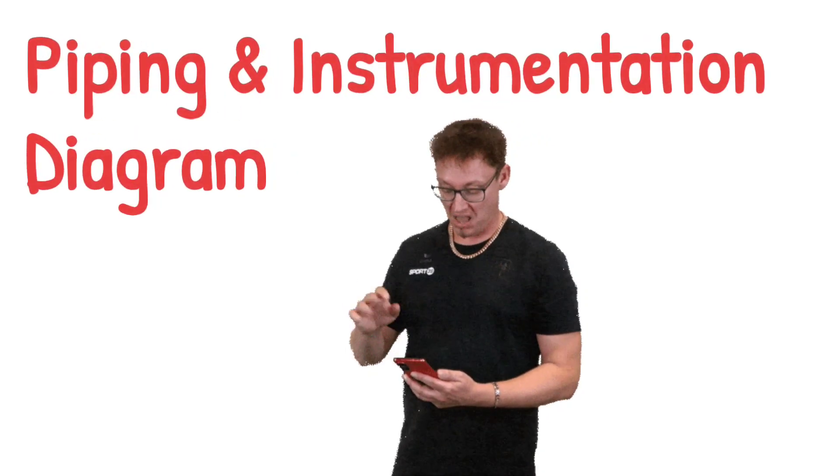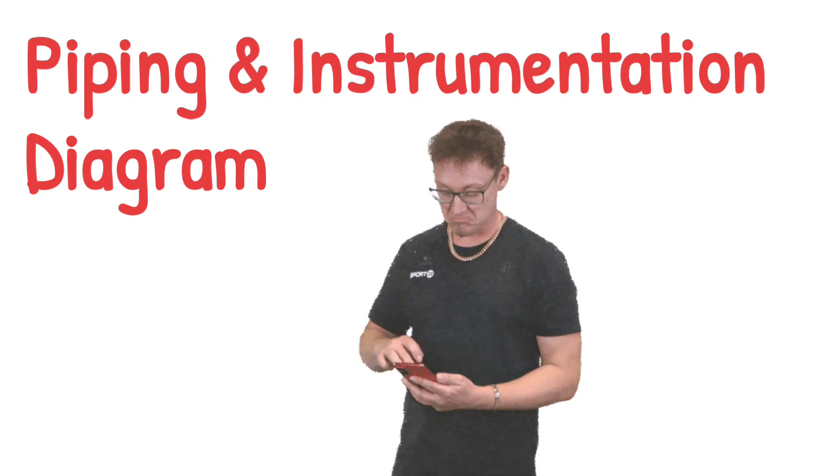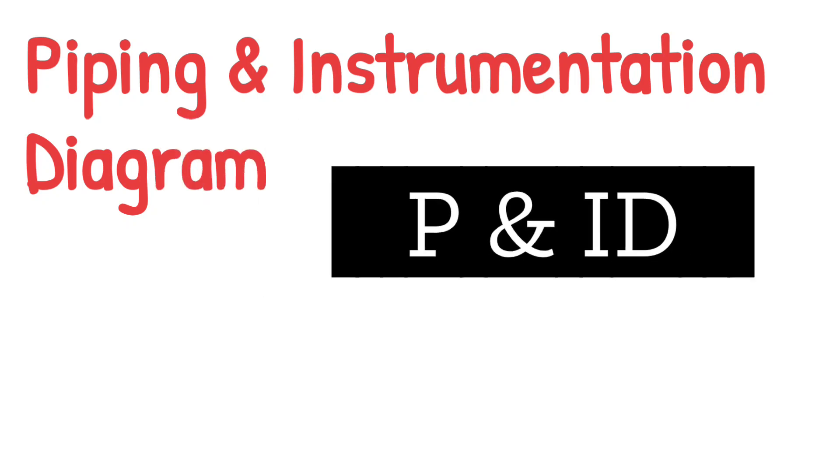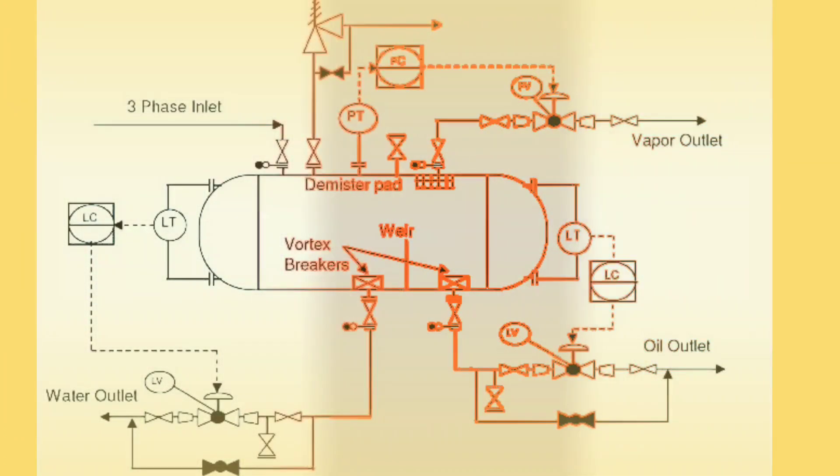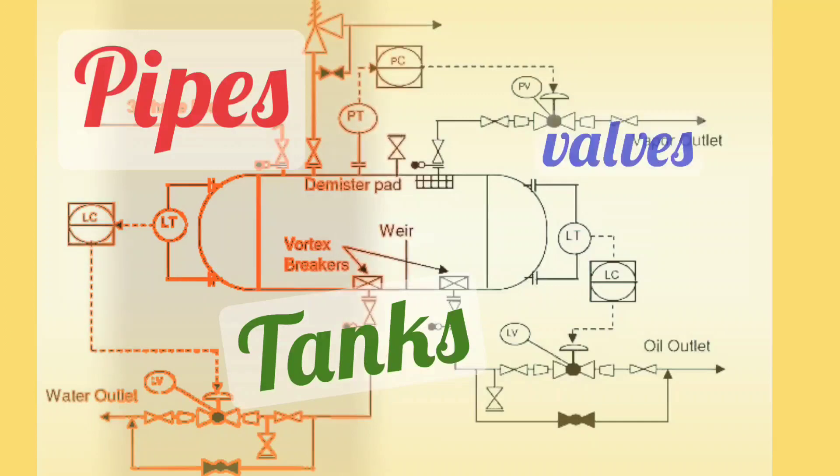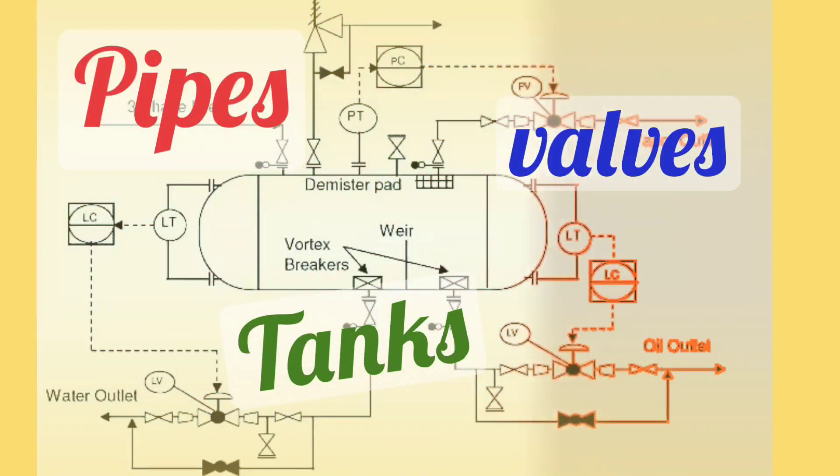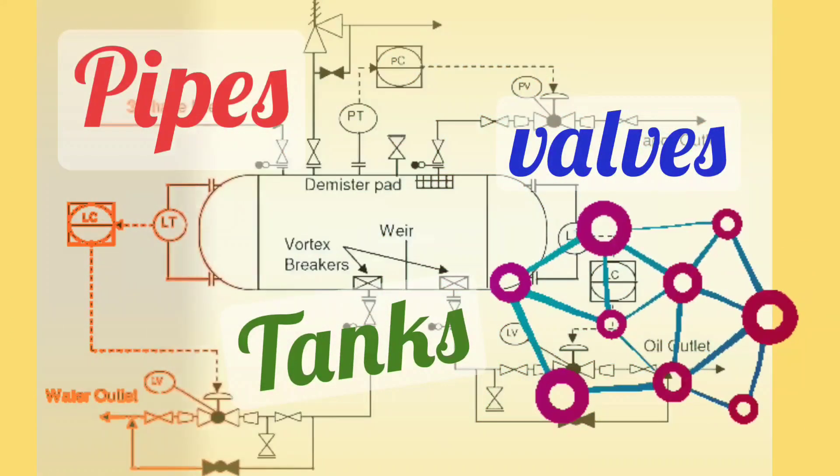In today's video we will discuss Piping and Instrumentation Diagram. This is also called P&ID. This is a detailed diagram showing where and how various pipes, tanks, valves, pumps, and instrumentation are connected in the process. In any industry,